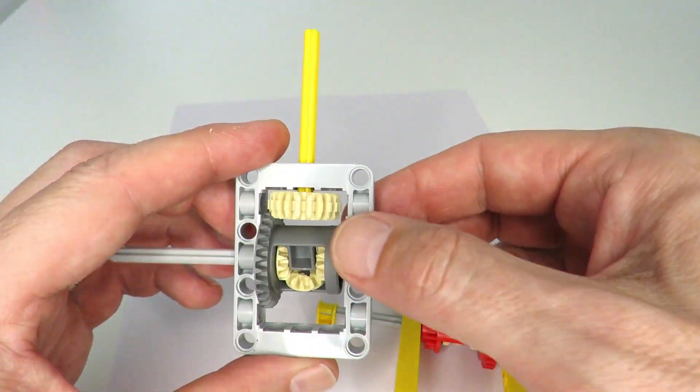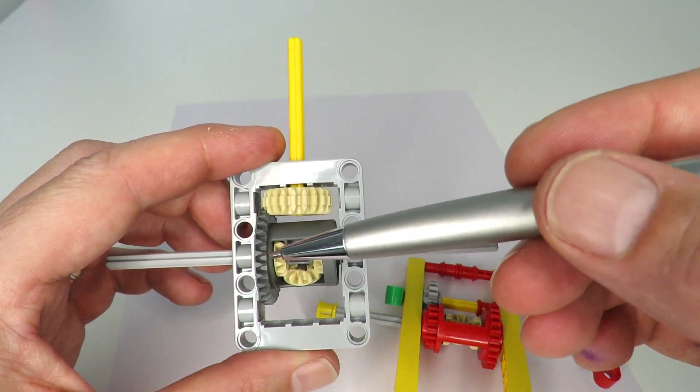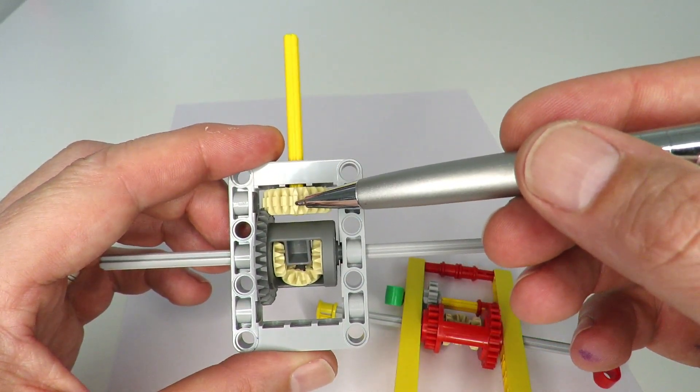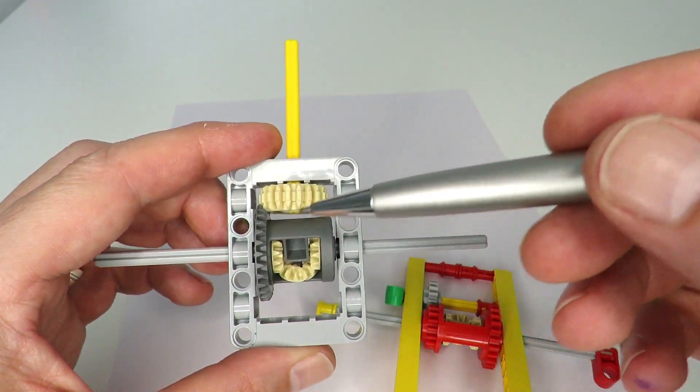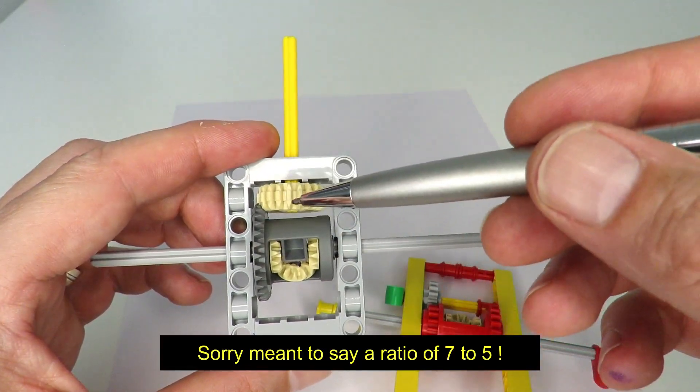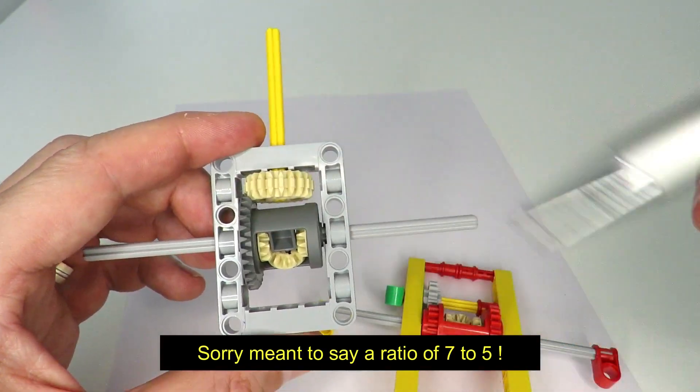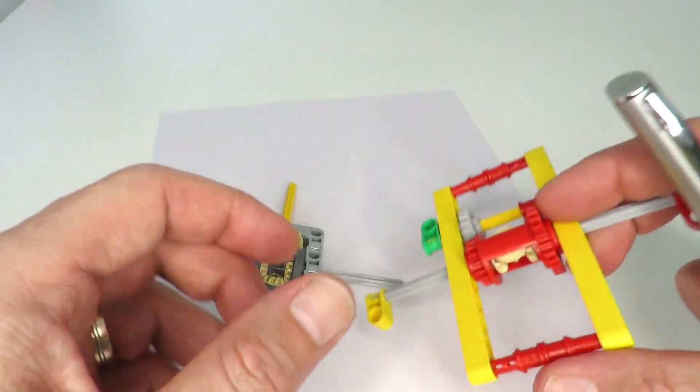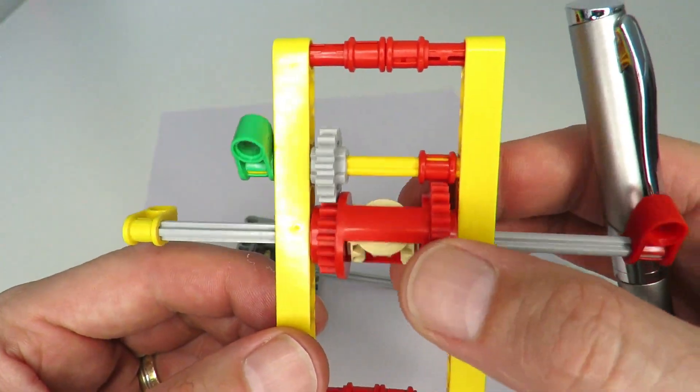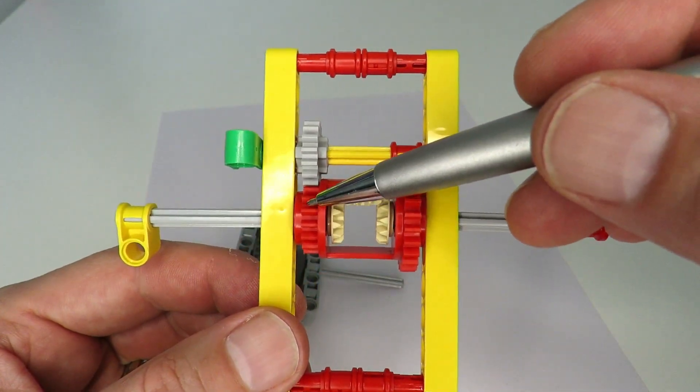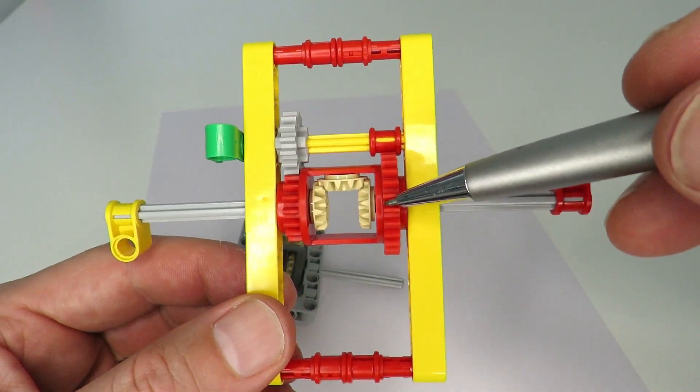The other big difference is the gearing ratios. With this one here, we've got a 28-tooth gear typically driving a 20-tooth bevel, which means that the ratio between the barrel and the output axle is in fact 7 to 5. Whereas this differential mechanism has got two options: on the left here, it's got a 16-tooth gear.